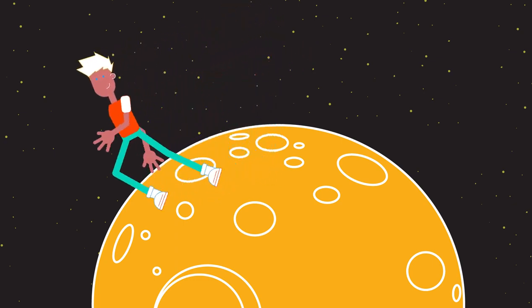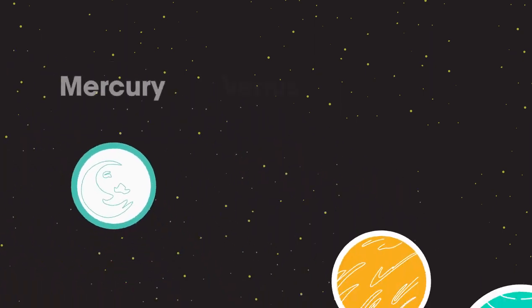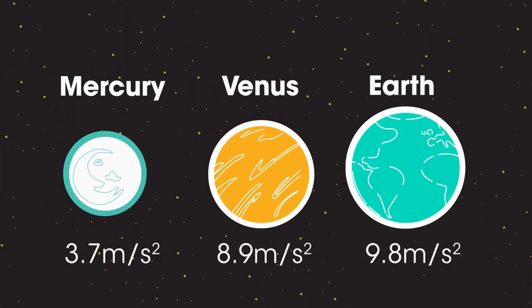See how gravitational field strength changes on the surface of different planets. This is because the planets have different sizes and masses. The largest planet, Jupiter, with the greatest mass, has the highest gravitational field strength.